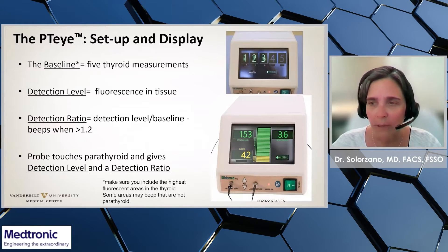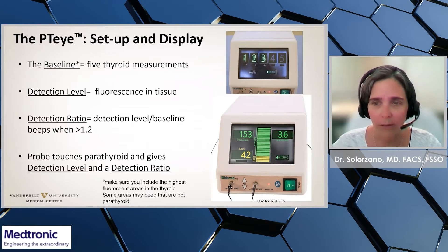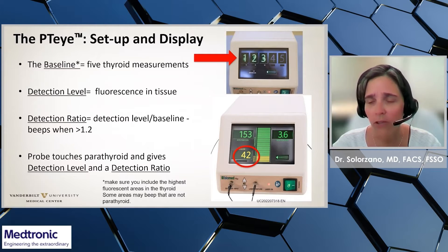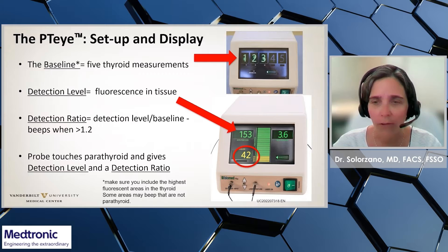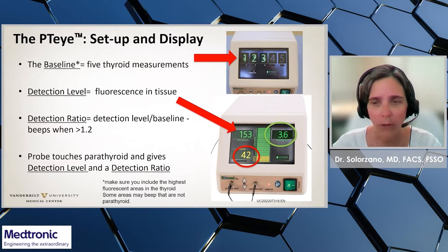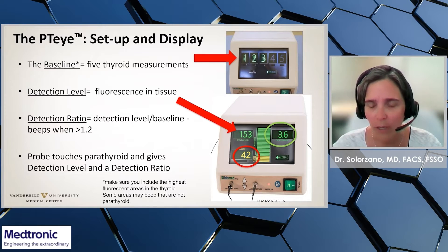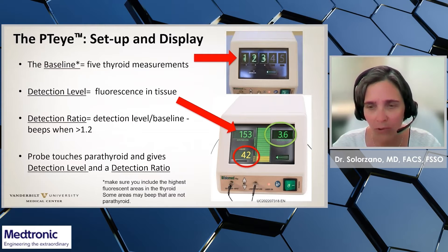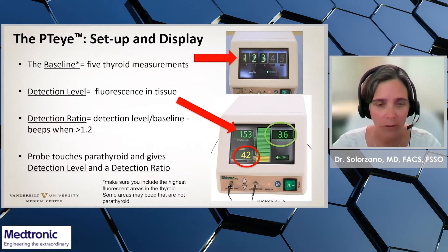Here is how to interpret the PTI display. When you turn on the console, you will need to set the baseline by taking five thyroid measurements. When the probe touches tissue, it gives a detection level and a detection ratio. The threshold for parathyroid detection is set at 1.2 times the baseline, and the PTI will beep. The example here shows a baseline of 42, a detection level of 153, making the ratio 3.6, consistent with parathyroid tissue.